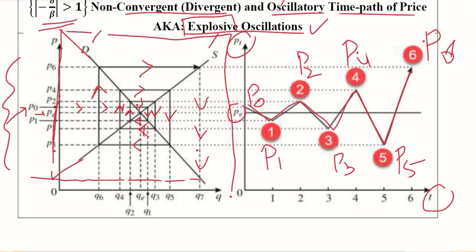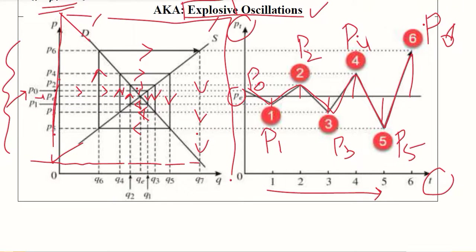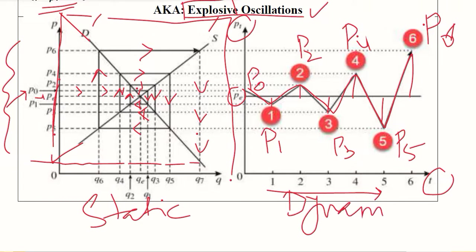In the dynamic time path panel, the oscillatory graph gets farther and farther from equilibrium. The amplitude is increasing as we progress further in time, showing divergence in both the static and dynamic sense — the system is diverging away from equilibrium.